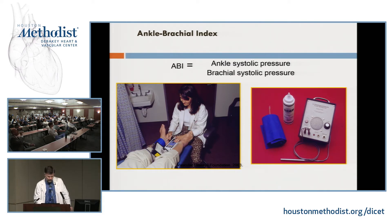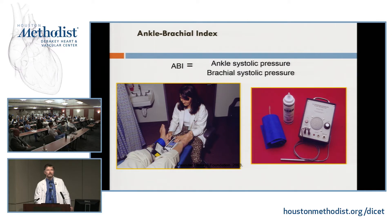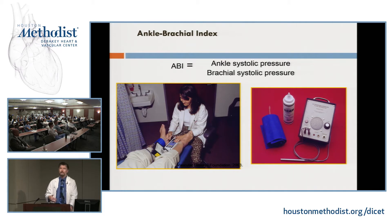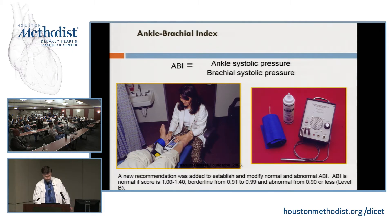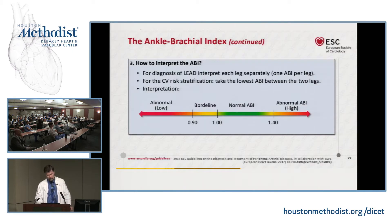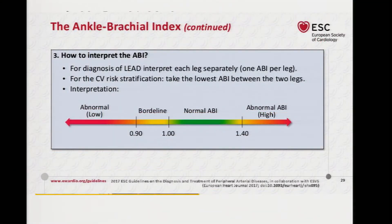The ankle brachial index is an important measurement. It's a vital sign because it is independently predictive of the risk of that patient dying from a major adverse cardiovascular event, independently of the Framingham risk factors. The normal ankle brachial index is somewhere between 1 and 1.4.